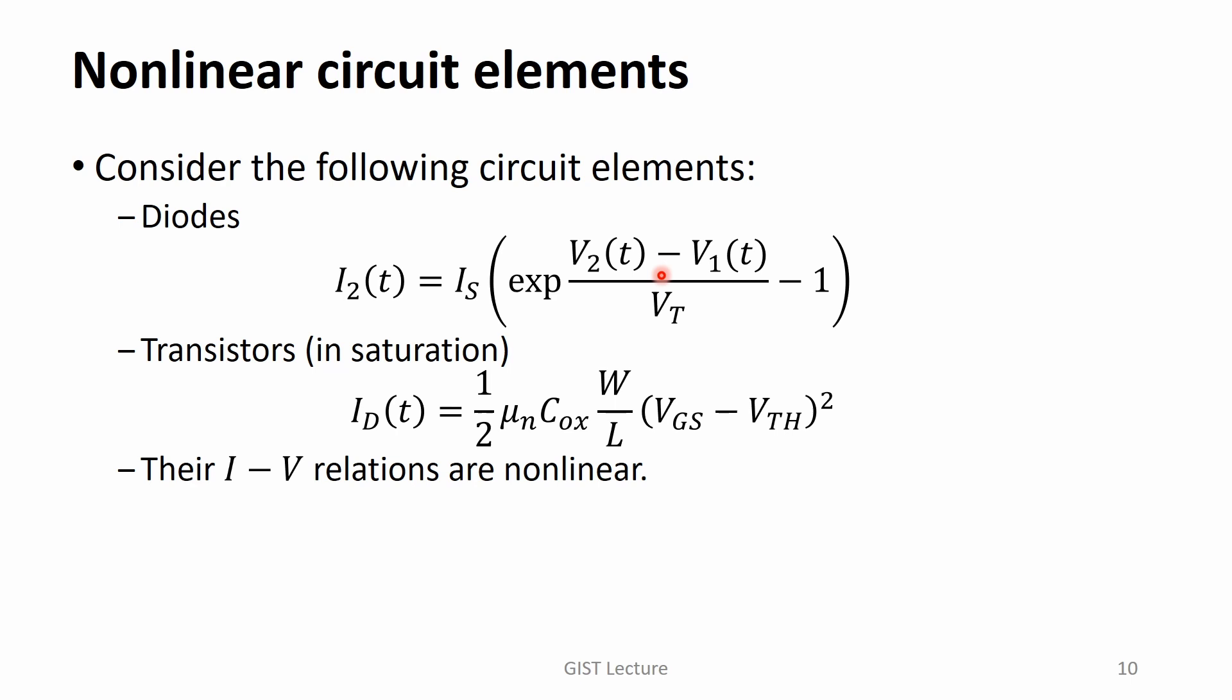For transistor, MOSFET, we can find multiple operational regions. When it is in the saturation mode, the drain current is proportional to the square of gate to source voltages. As shown in these examples, IV relations are nonlinear. When a circuit has at least one nonlinear circuit element in it, it becomes a nonlinear circuit.